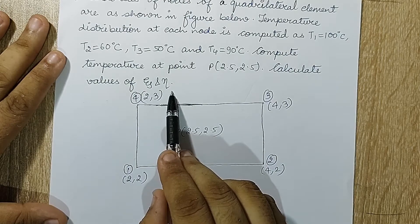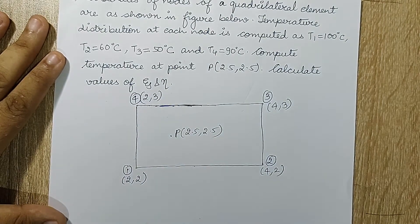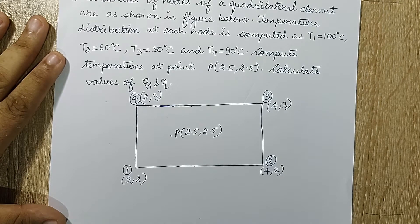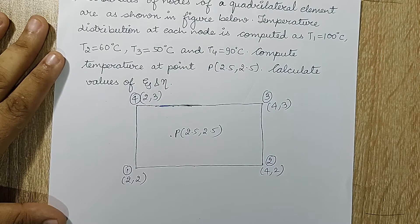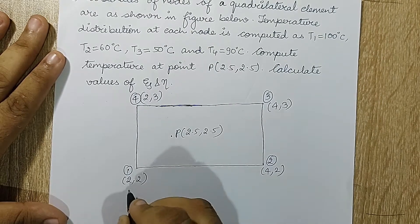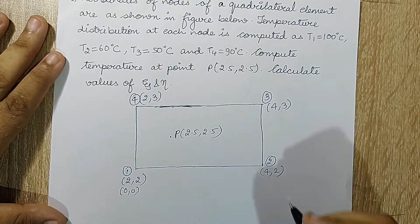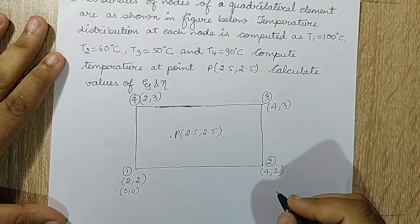Now I have to solve using the natural coordinate system. If you look at this problem, I have already solved this question before, but that time I was solving for the rectangular coordinate system. The same numerical you can solve using natural coordinate system as well. If you look at the derivation from the previous lecture, I had one node at (0,0). So let me shift this node to (0,0) and the rest of the nodes will shift accordingly.